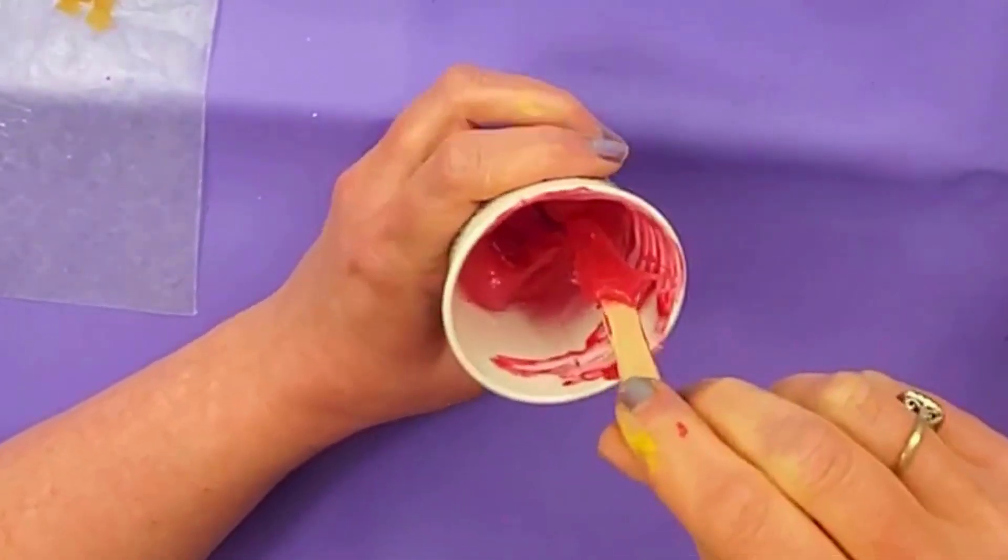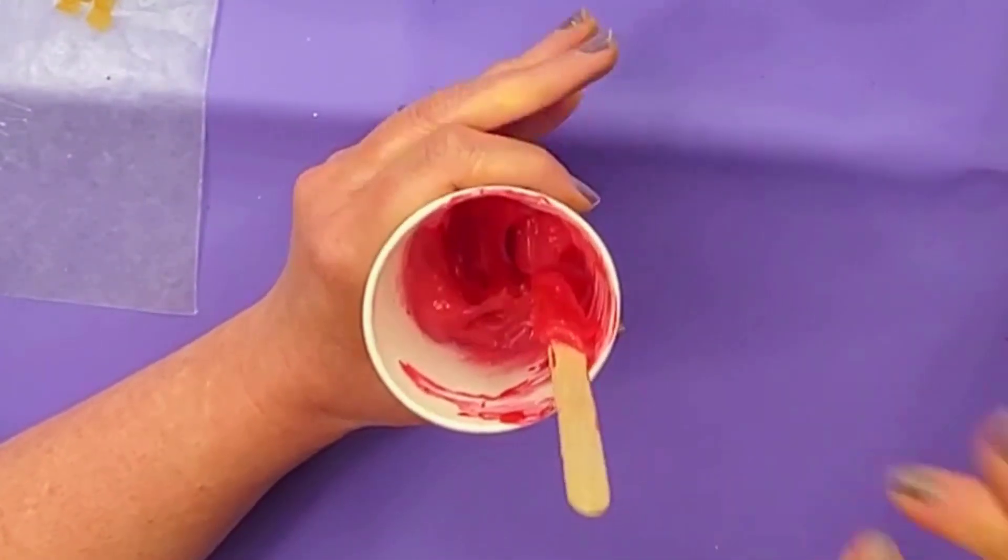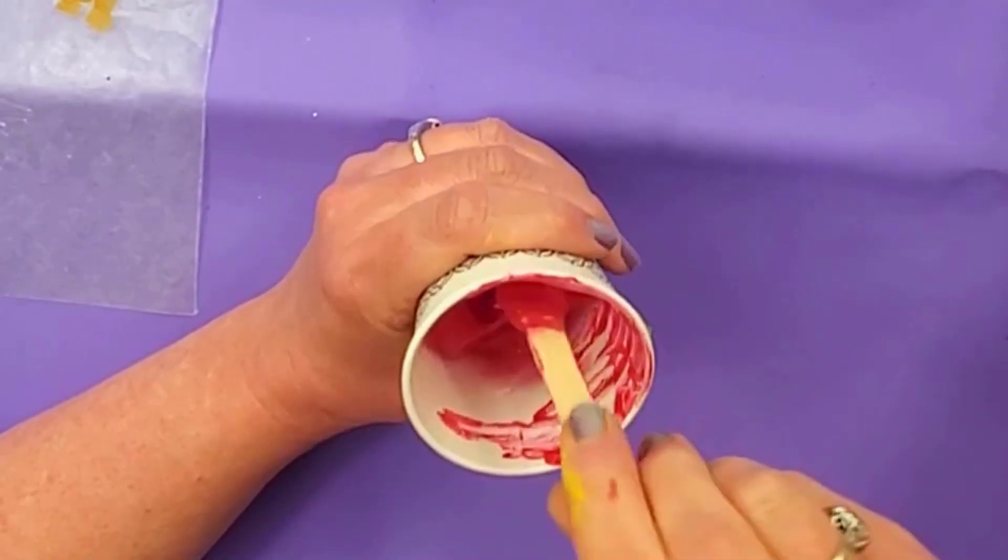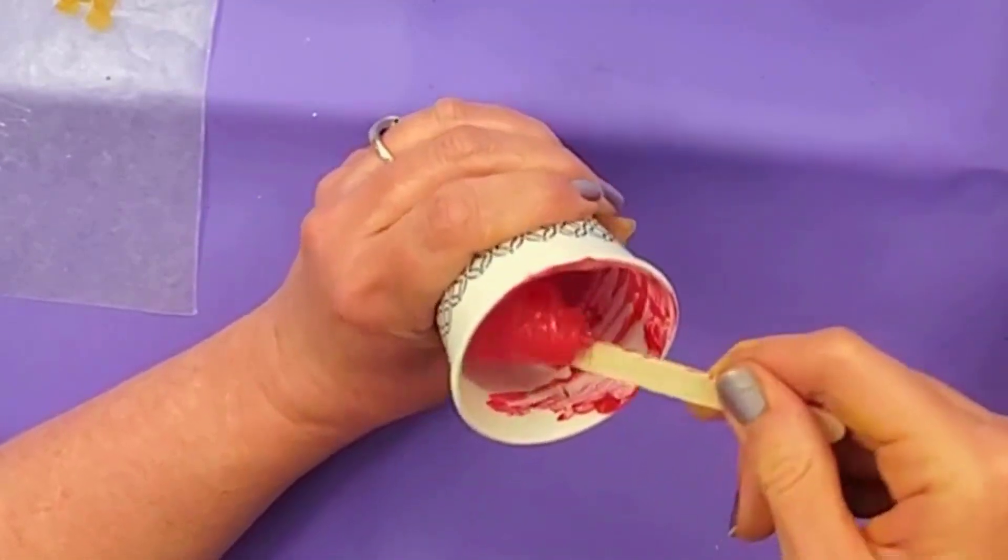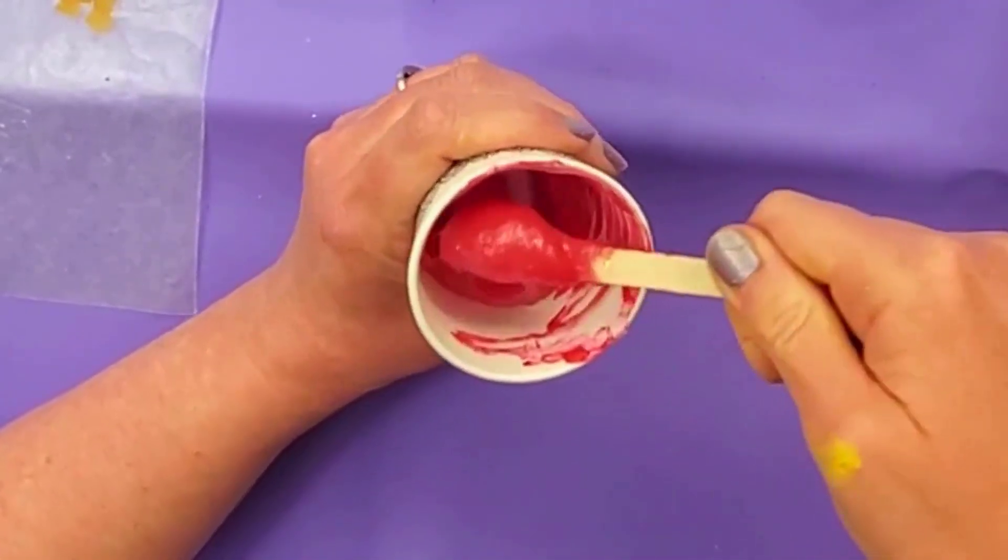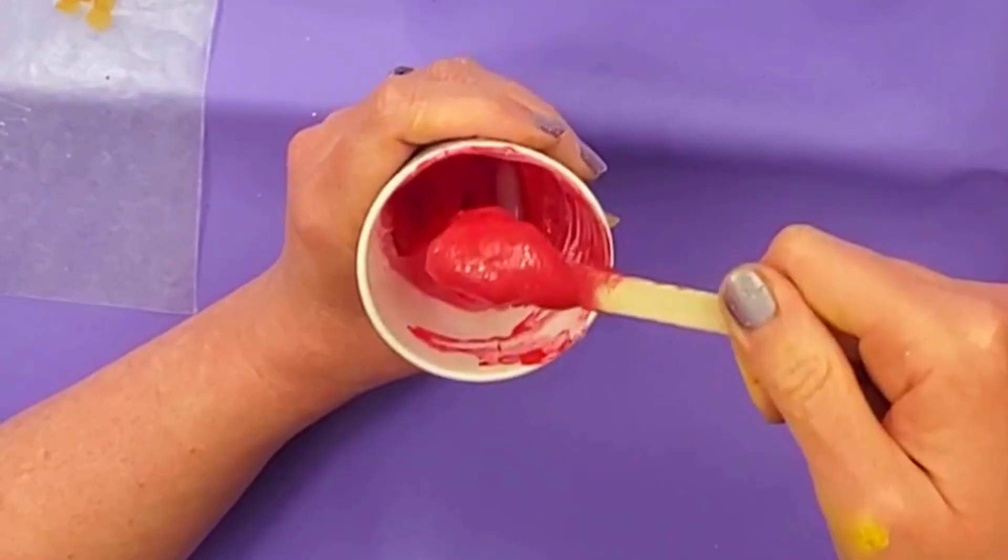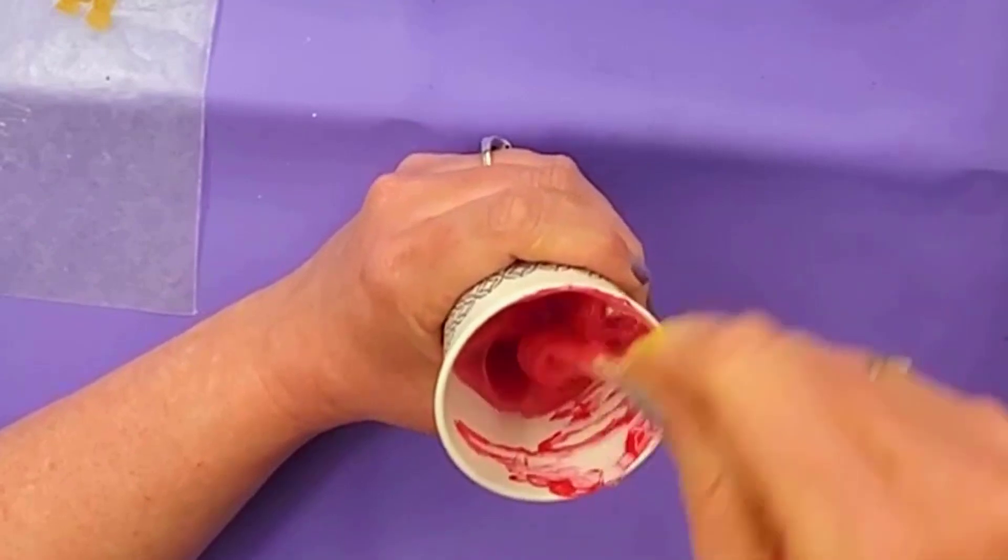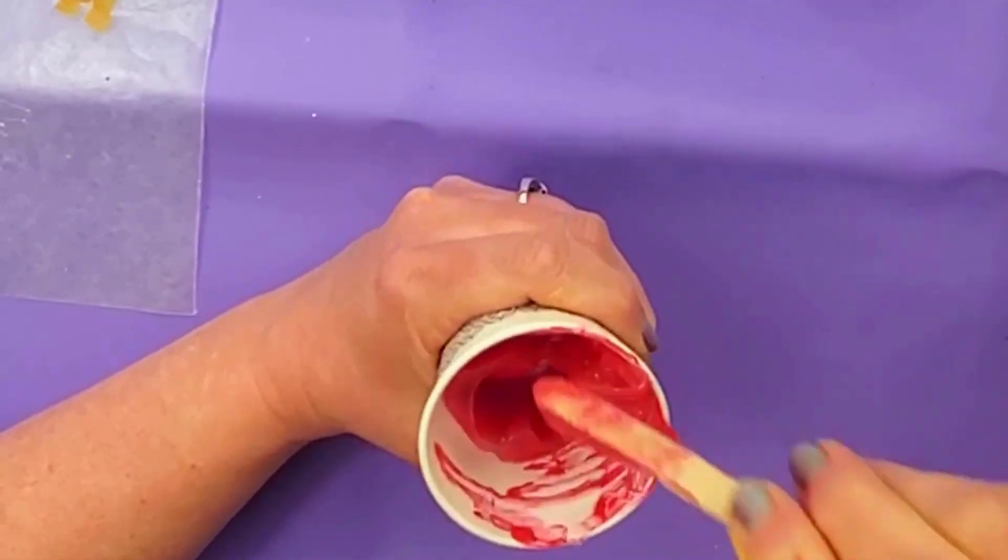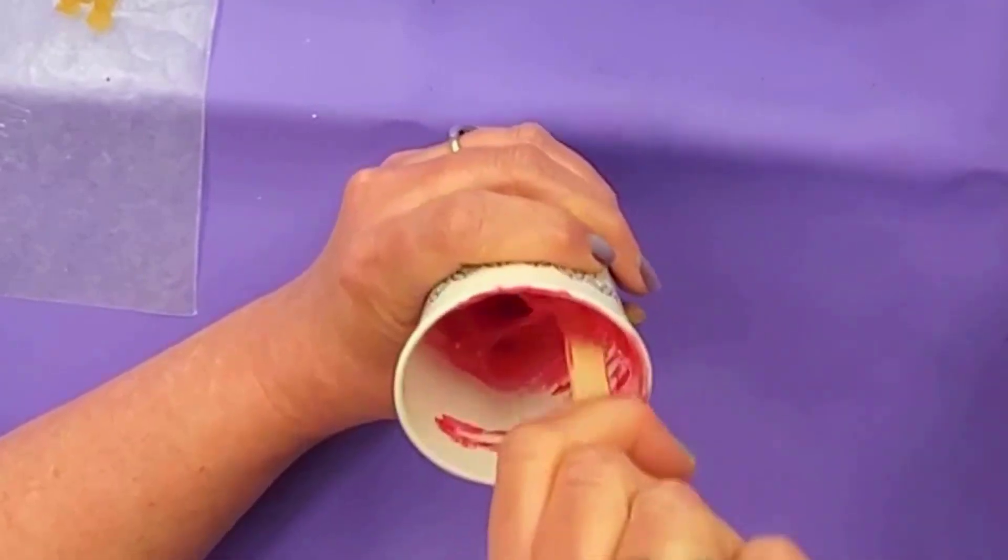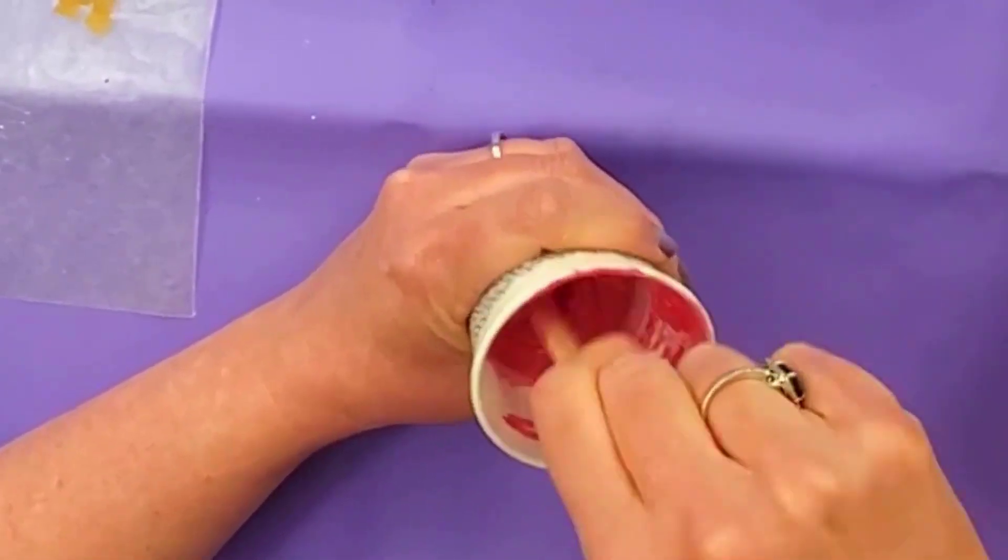I often get asked if you can use paint when coloring resin or silicone. You can use paint as I am now, but as you can see, this turns out as a solid color instead of see-through. That's why I use alcohol ink when I want something see-through, and paint when I want it solid.